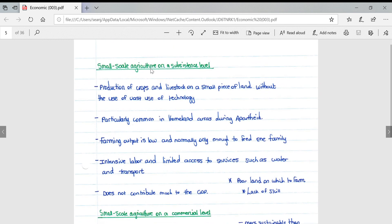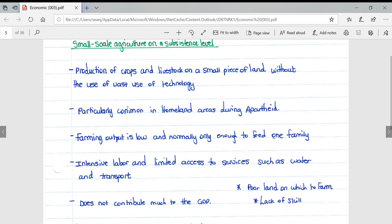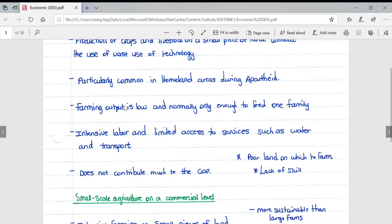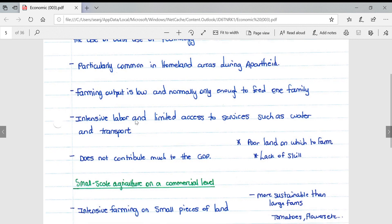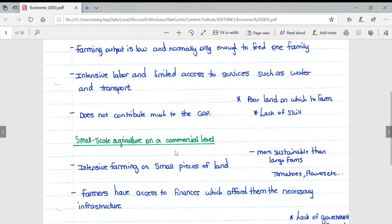Small-scale agriculture on a subsistence level involves production of crops and livestock on a small piece of land without the use of vast technology. It's particularly common in homeland areas during apartheid. Farming output is low and normally only enough to feed one family. It involves intensive labor and limited access to services such as water and transport. It does not contribute much to GDP because of the poor land on which to farm as well as the lack of skill.